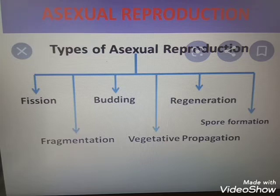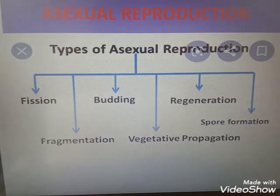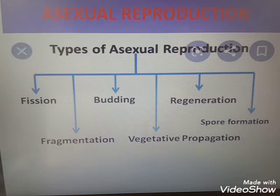The types of asexual reproduction are: fission, fragmentation, budding, vegetative propagation, regeneration, and spore formation. Asexual reproduction is common among various simple plants and animals. The common types include fission, spore formation, budding, fragmentation, zoospores, conidia, gemmules, and vegetative reproduction.